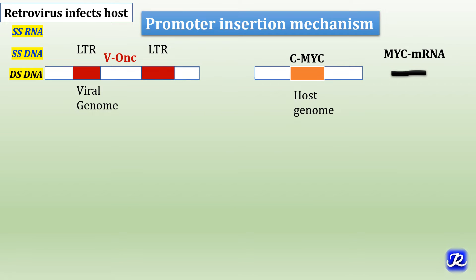The first mechanism of activation of proto-oncogenes into oncogenes is promoter insertion. This is a schematic representation of the host genome having the C-MYC gene in an inactive state, leading to transcription of MYC mRNA. When a retrovirus infects the host cell, the single-stranded RNA is transcribed into single-stranded DNA by reverse transcriptase, then into double-stranded DNA called provirus. This viral genome has long terminal repeat sequences which can act as either promoter or enhancer.